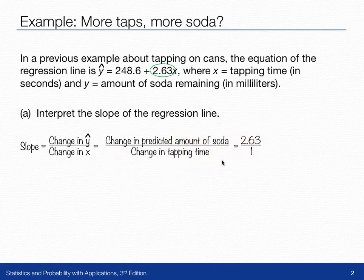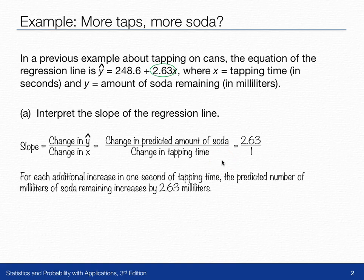So if we're going to summarize that, we can say that for each increase in 1 second of tapping time, that's the 1 here, the predicted number of milliliters of soda increases by 2.63 milliliters. And so what we're doing is identifying that this 2.63 is dealing with milliliters of soda, and the 1 is dealing with tapping time in seconds.